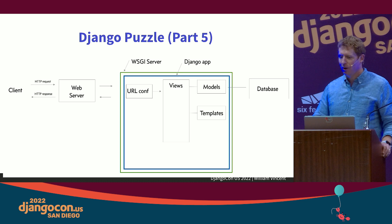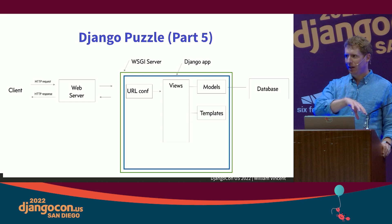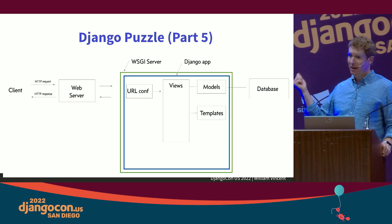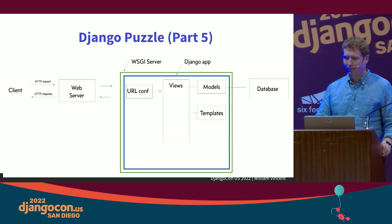This is most of Django right here. A client submits a request, it hits the web server (locally the Django dev server), hits the WSGI server, then we're within Django — it hits the URL conf, goes to the view, the view combines models and templates, hits the database if needed, and sends the response back to the client.